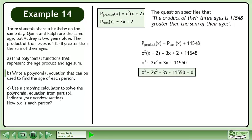The polynomial equation is x³ + 2x² - 3x - 11,550 = 0.